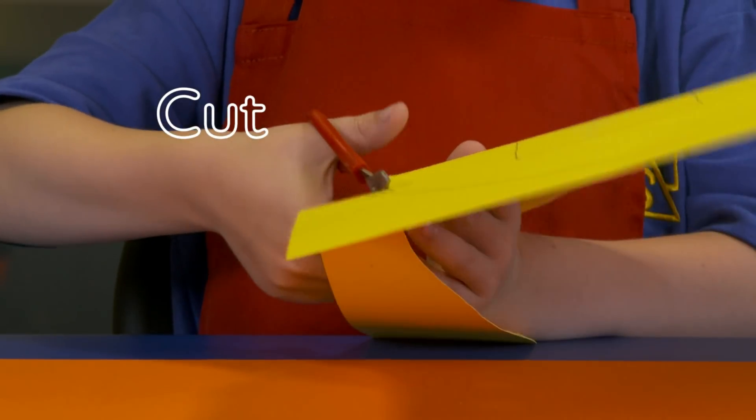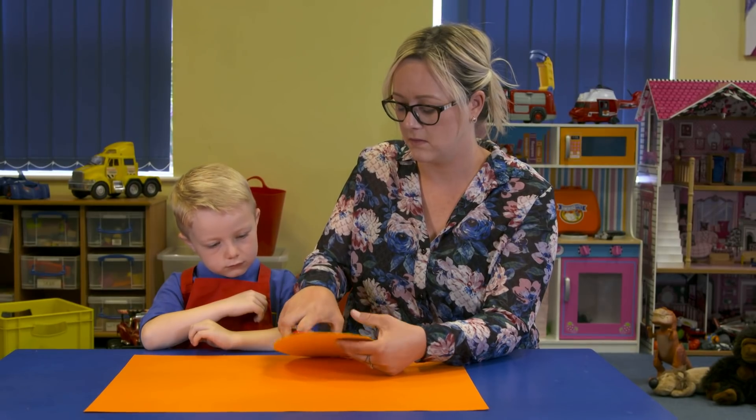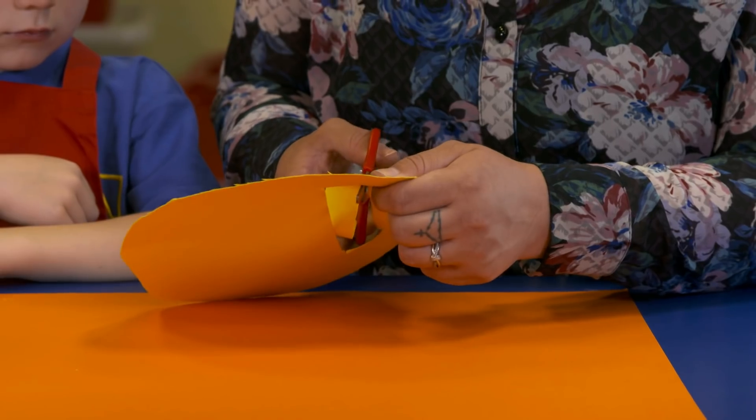Cut out the helmet shape. Ask a grown-up to help cut out the hole to make the visor.